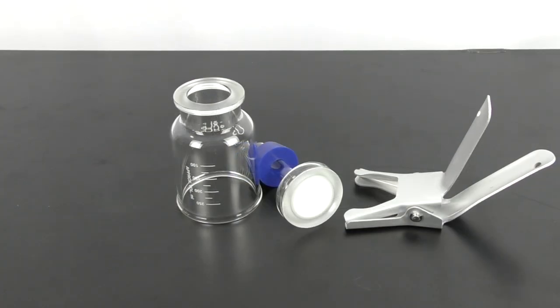The set includes a borosilicate glass funnel and base, an anodized aluminum spring clamp, and a perforated silicone stopper size 8.